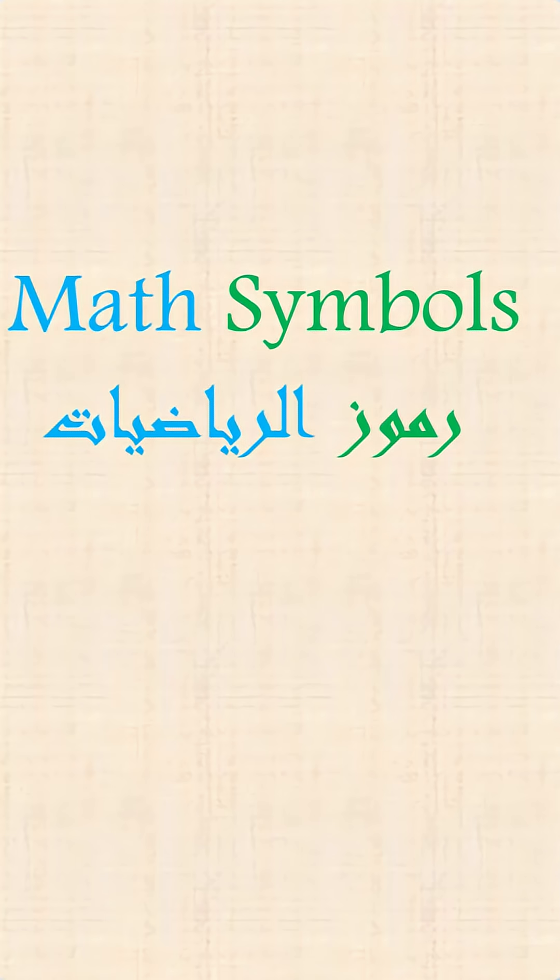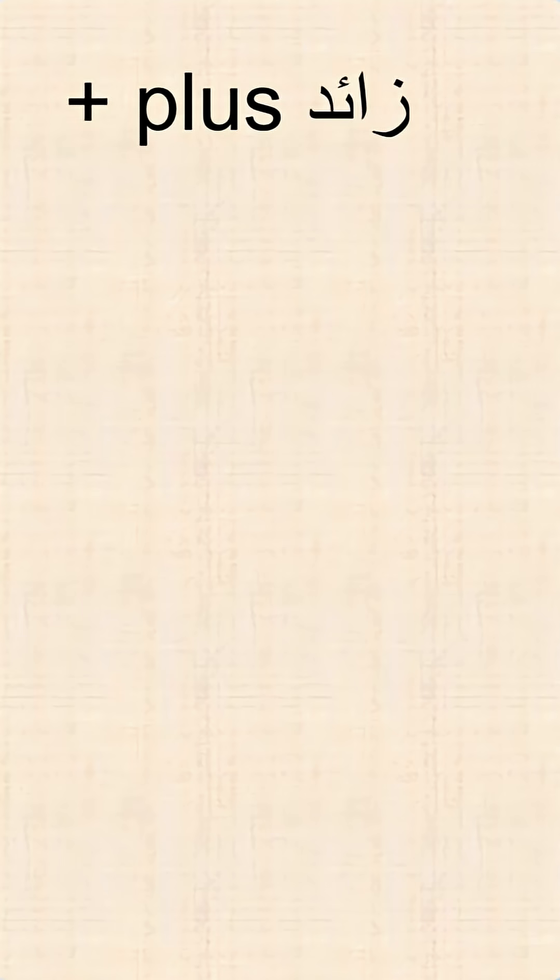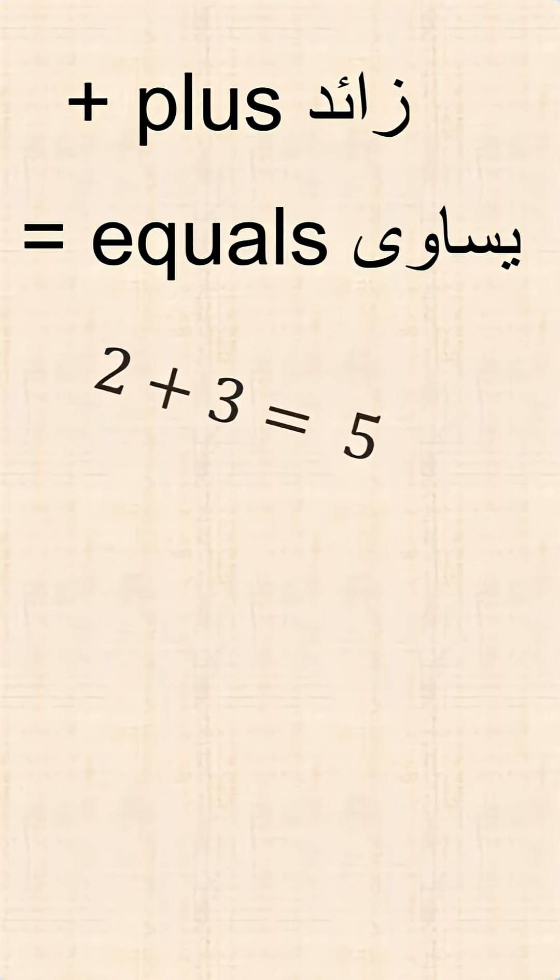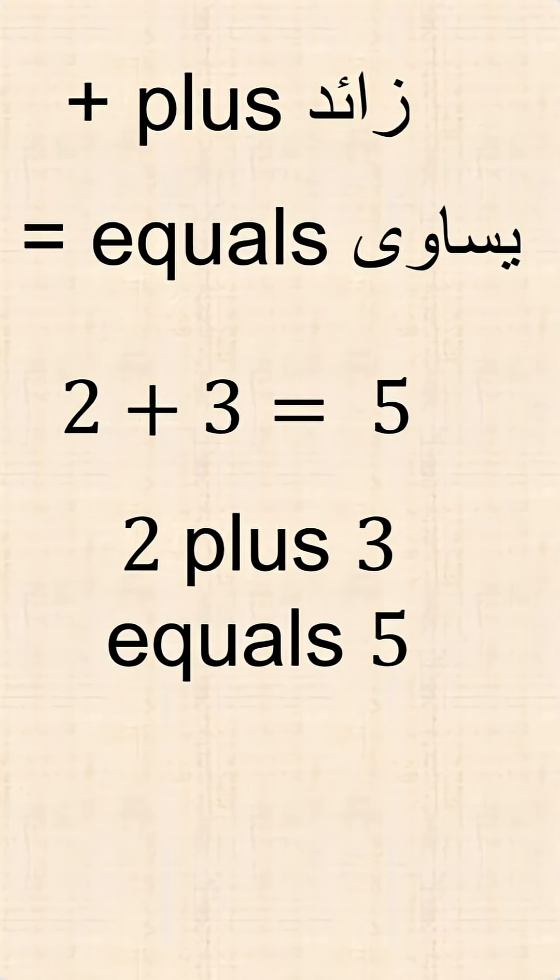Math symbols: plus, equals. 2 plus 3 equals 5.